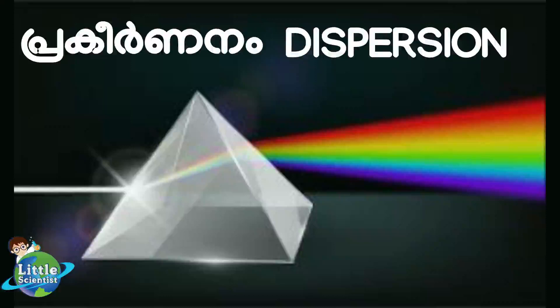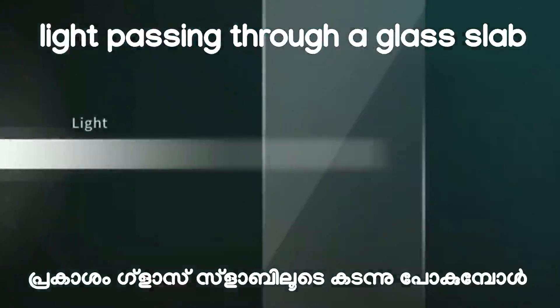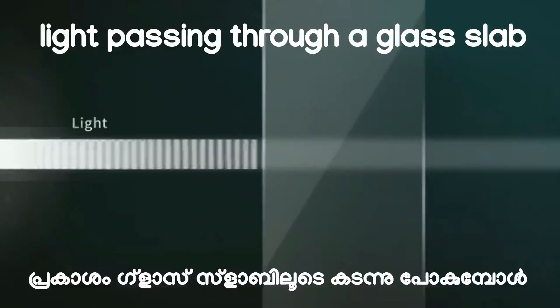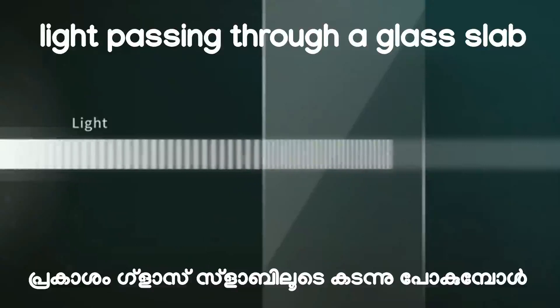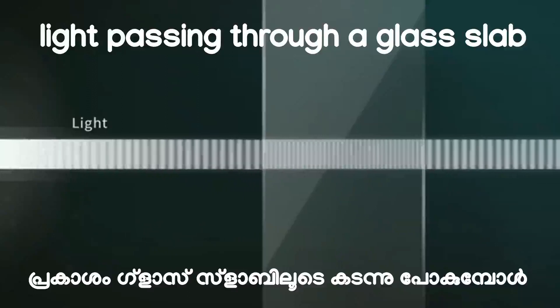In this video, we are discussing the dispersion of light. When light passes through a glass slab, it is refracted. But it would seem as if white light has exited unchanged because both surfaces are parallel.